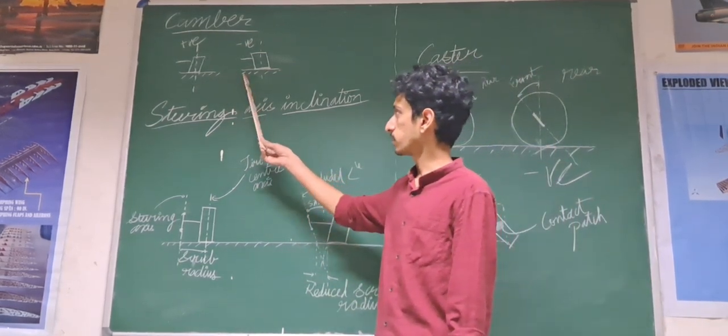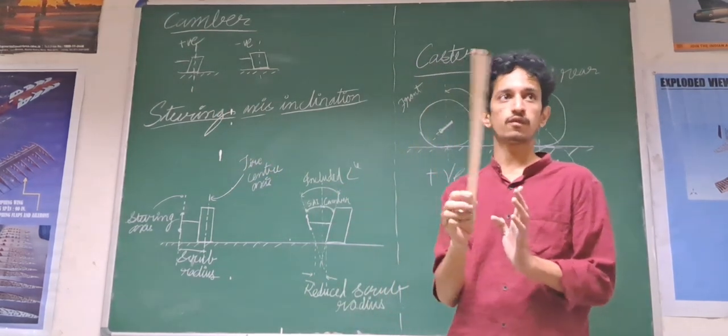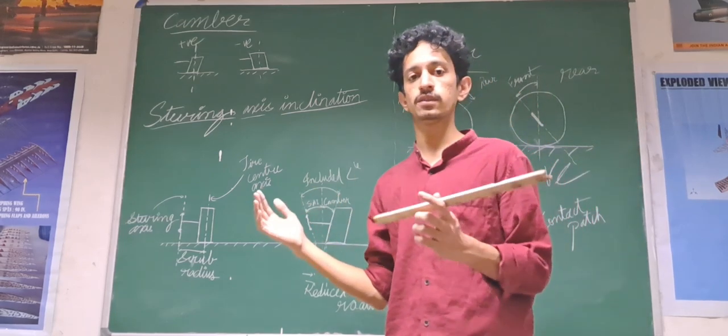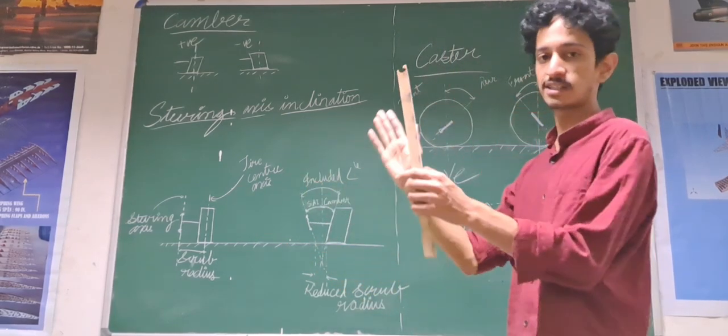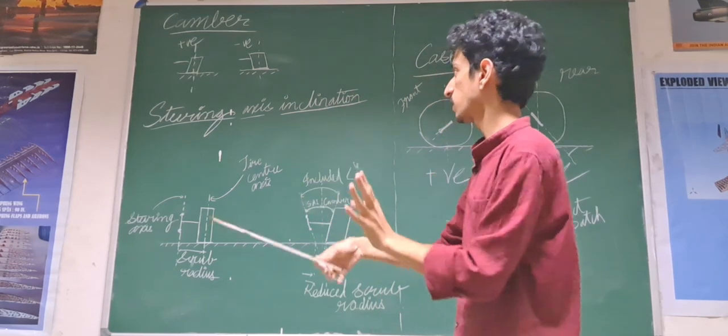First one is the camber. The camber is the angle of inclination which you can see when you see your go-kart from the front view, that is from the nose of it. You can see that it forms a certain angle with the vertical. So, that is called as the camber.